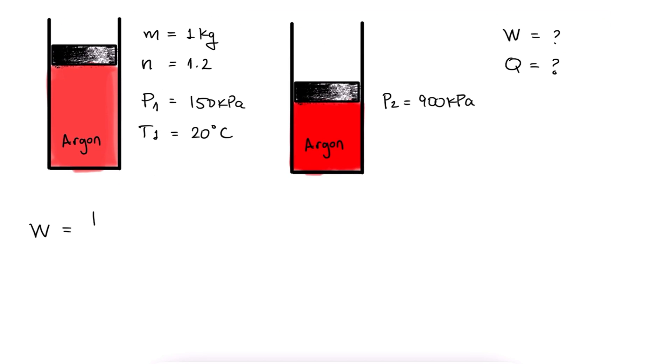In the main lecture video, we derived two equations for the work of polytropic processes. In this case, we'll use the one for when n is not equal to 1. Looking at it, we quickly realized that we don't have the volume values for either the initial or the final state. Even if we write PV as MRT for both PV terms, we wouldn't have the value for T2.